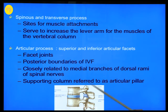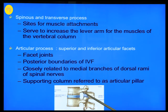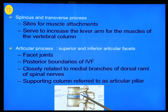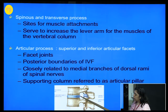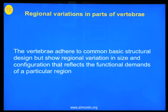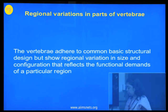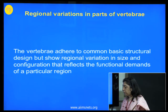The articulating facets form the articular pillars and also form the posterior boundary of the intervertebral foramen, whose superior and inferior boundaries are formed by the pedicles of the upper and lower vertebrae. The anterior boundary is formed by the posterolateral aspect of the vertebral body, intervertebral disc, and the body below. Vertebrae adhere to a common basic structural design but show regional variations in size and configuration that reflect the functional demands of a particular region.